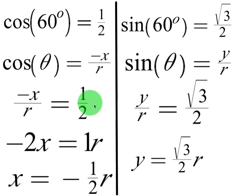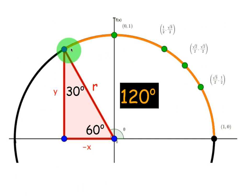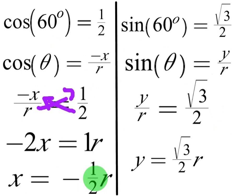Remember, this orange arc represents 120 degrees from the starting point. So the way we'll set this up, negative x over r is equal to cosine of theta equals 1 half. We will cross multiply, so we'll get negative 2x equals 1r. Then you will divide both sides by negative 2, and you get x equals negative 1 half r. So that will be the x value of this point.